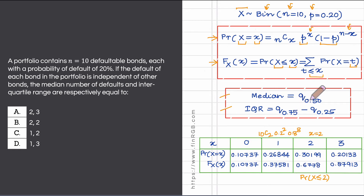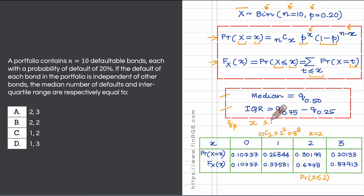Now let's calculate the quantiles. Recall the definition: the quantile Q_P corresponding to probability P is the smallest realized value of the random variable X such that the CDF evaluated at X is greater than or equal to P. We are looking for the smallest possible X for which this condition is satisfied.